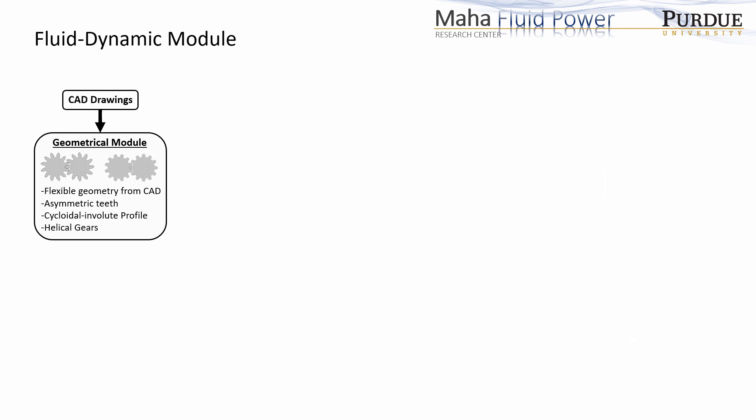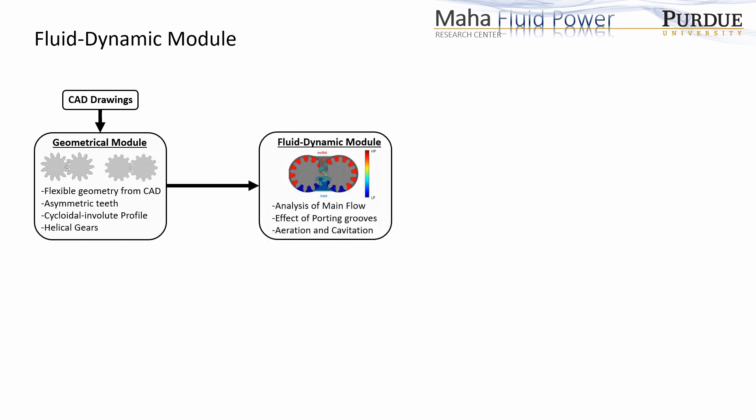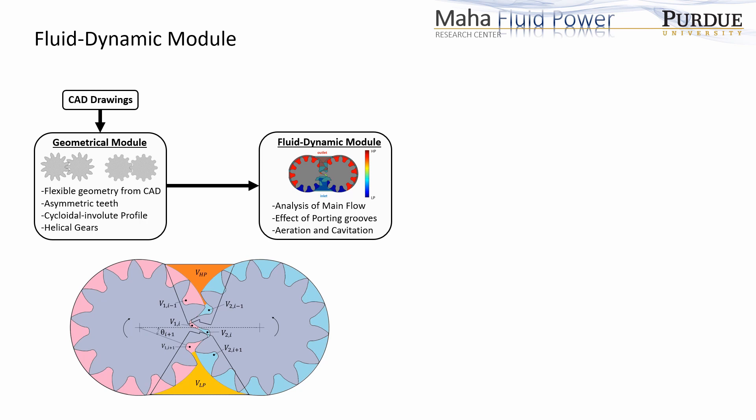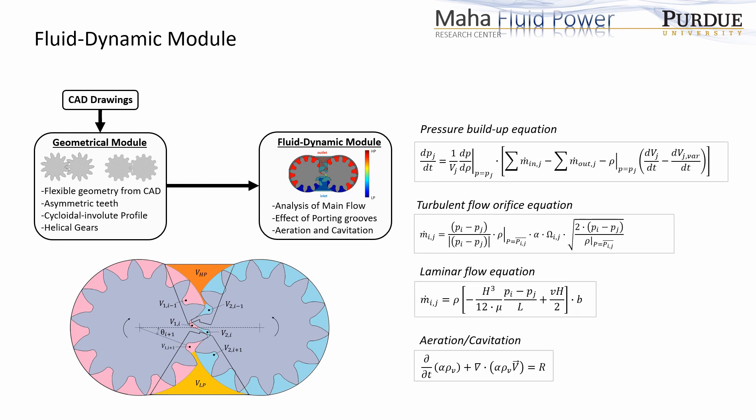The geometric information from the geometrical module is passed onto the fluid dynamic module. The fluid dynamic module is based on a lumped parameter approach where the fluid domain is divided into a number of control volumes. The pressure build-up equation is solved to determine pressure in each of these control volumes. The flow connections between the control volumes are modeled either as orifices or laminar flow connections. To determine aeration and cavitation in these control volumes, transient models derived from the Rayleigh-Plesset equation are used.